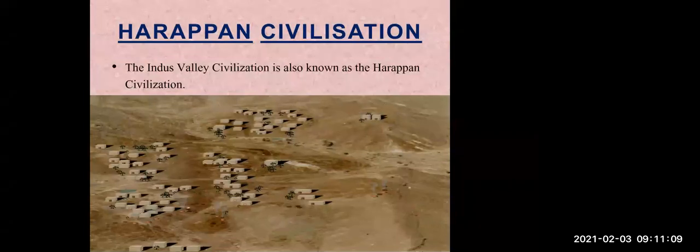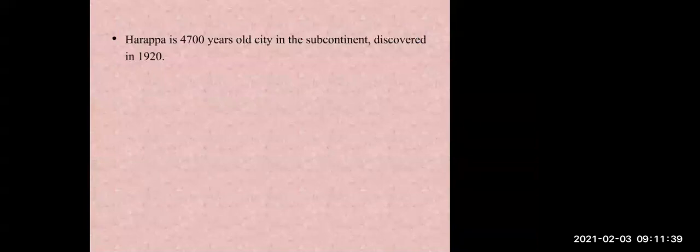The Indus Valley Civilization is also known as the Harappan civilization. Indus is the name of a river, and in this page you can see the village of Harappa. Harappa is a 4,700-year-old city in the subcontinent, discovered in 1920.